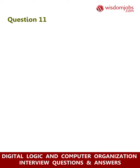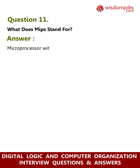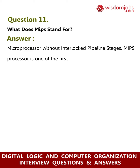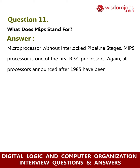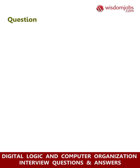Question 11: What does MIPS stand for? Answer: Microprocessor Without Interlocked Pipeline Stages. The MIPS processor is one of the first RISC processors. Again, all processors announced after 1985 have been of RISC architecture.